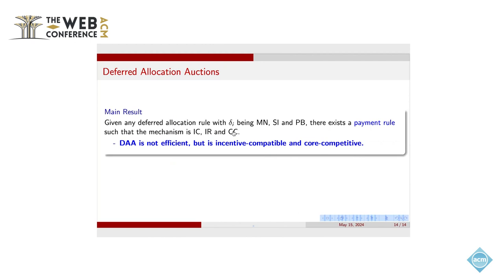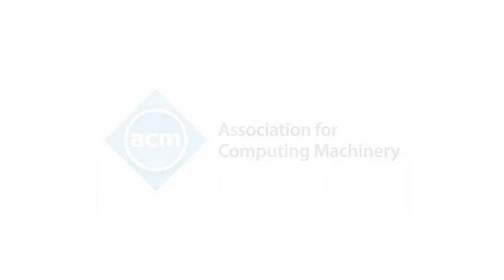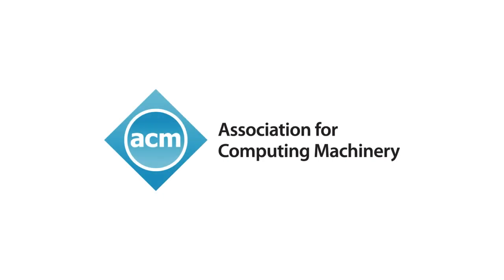So generally, briefly speaking, our paper can be summarized into a very simple sentence. We provide a new auction mechanism set for the PONM market. And this is called the deferred allocation auction. It is not efficient, but it is incentive compatible, and it has good revenue in the sense that the revenue is core competitive. That's my talk. So thank you very much.